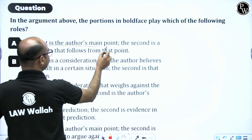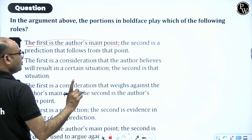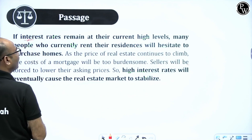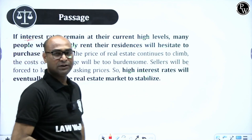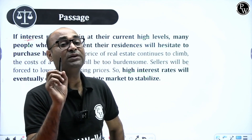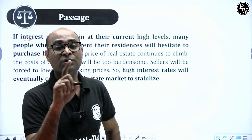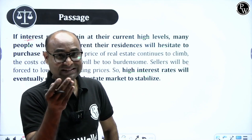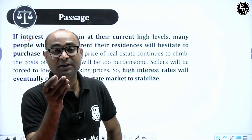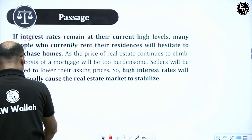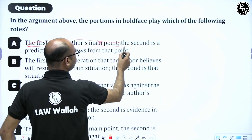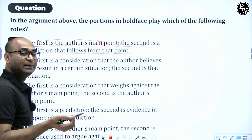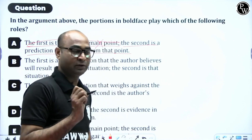Evaluating the options: the first bold part — is it the author's main point? The first part is a condition, and a condition cannot be conclusion. Two important points: if any sentence begins with 'if,' it can be neither conclusion nor premise, because premise is fact and conclusion is taken from fact. So any sentence with 'if' will not be part of the argument. Option: the first bold part is the author's main point — incorrect. Second bold part is a prediction that follows from that point — second part is the main conclusion, not a prediction.